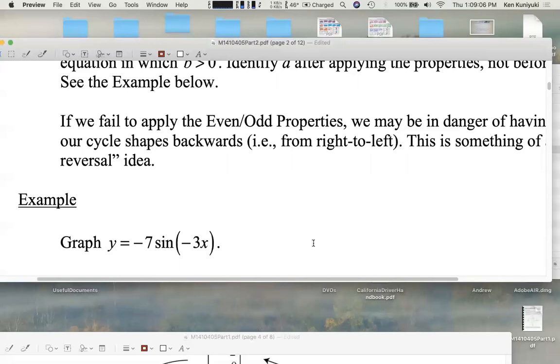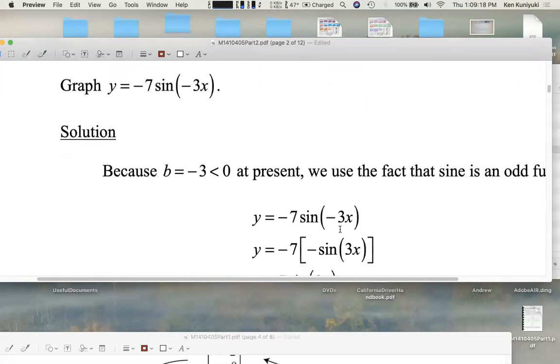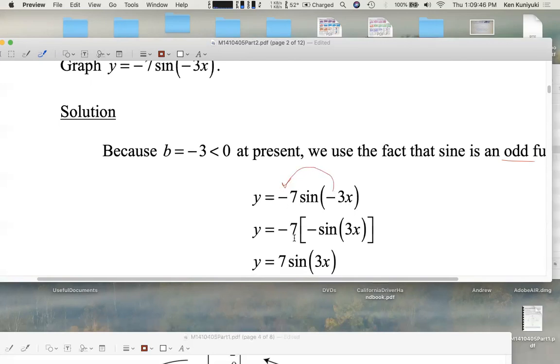Big problem. The negative sign there. b is negative. It's negative 3. We hate the fact that b is negative. So we're going to apply the even-odd properties. We do not want to graph backwards. It's like a time reversal. Well, is sine even or odd? Sine is odd, which means that this negative sign basically pops out. Sine of negative 3x is the opposite of sine of 3x. Negative 7 times negative 1 sine of 3x is positive 7 sine of 3x.